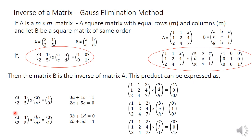Similarly, for a 3 by 3 matrix A with elements [1, 1, 2; 1, 2, 4; 2, 4, 7], if B is the unknown inverse matrix with elements a, b, c, d, e, f, g, h, i, and the product AB equals the corresponding 3 by 3 identity matrix, then B is the inverse of A.